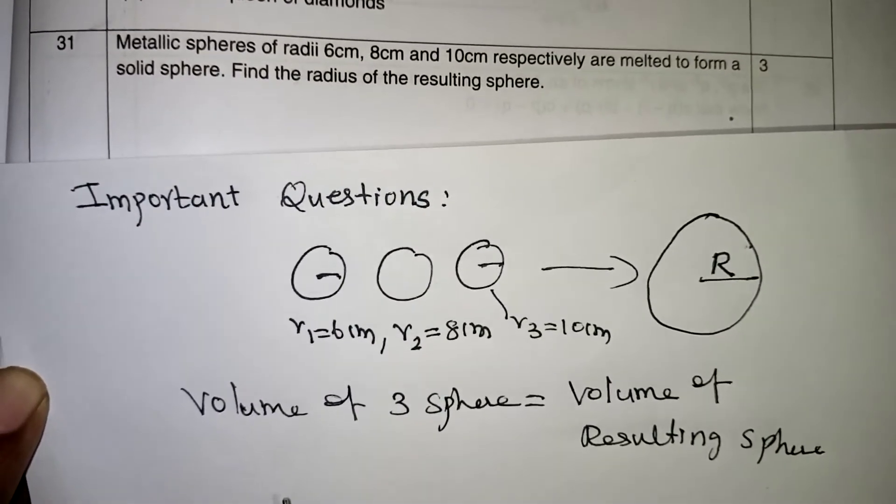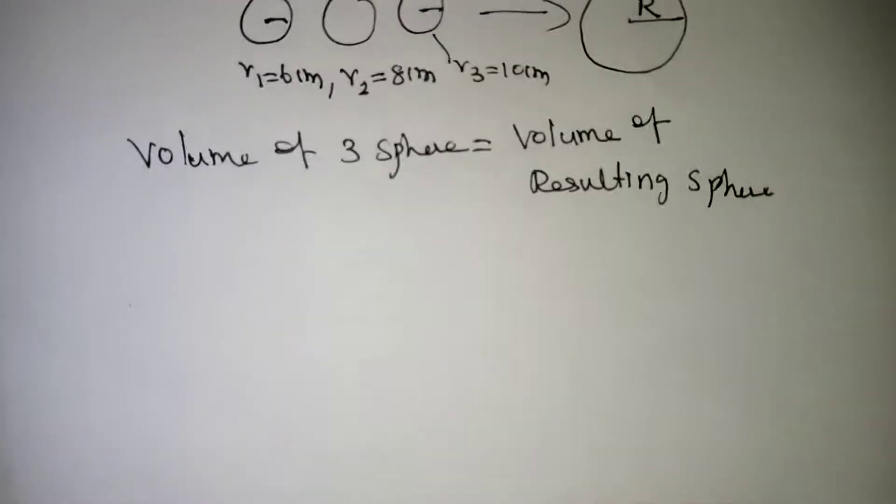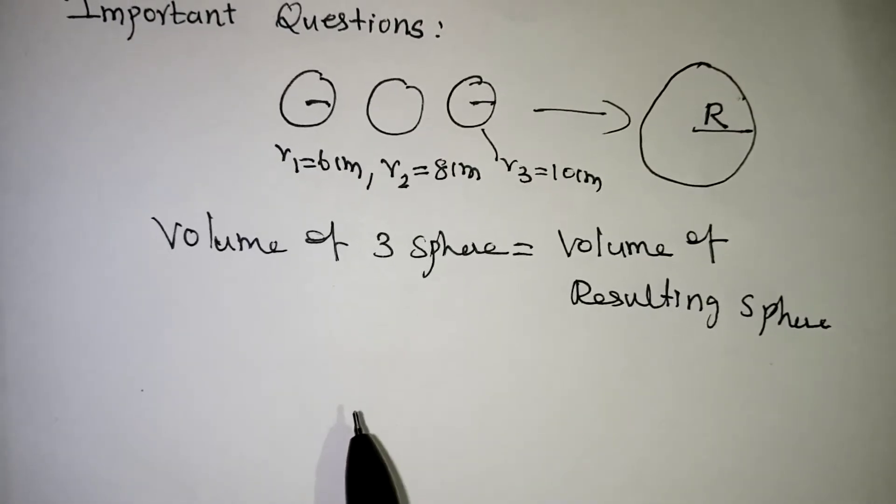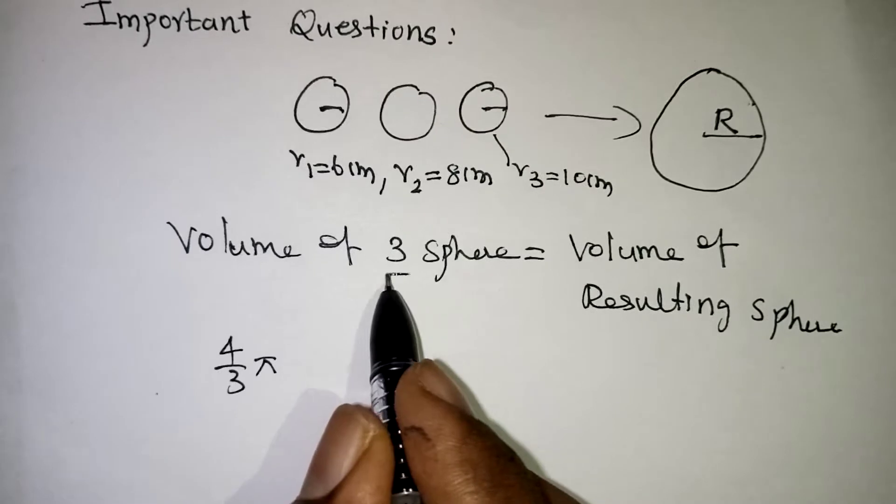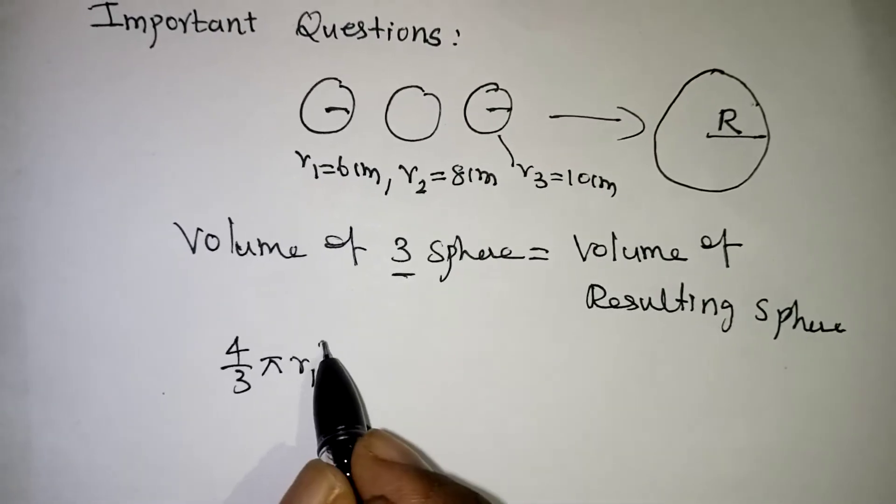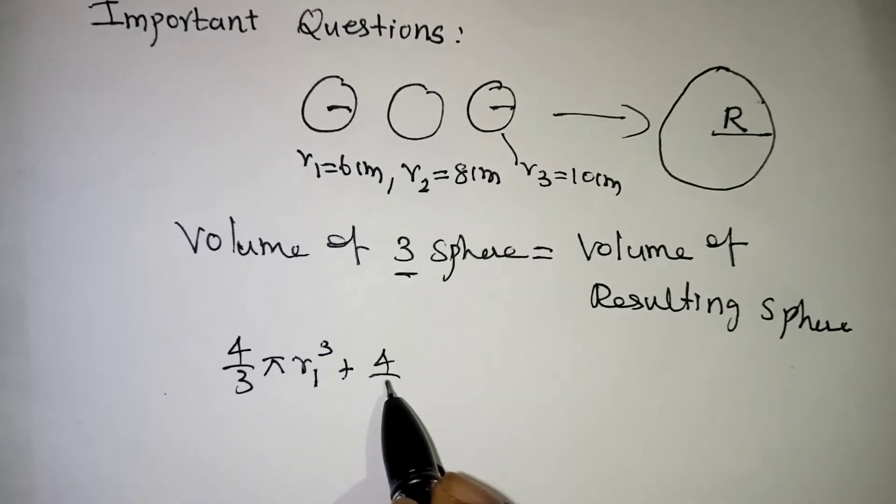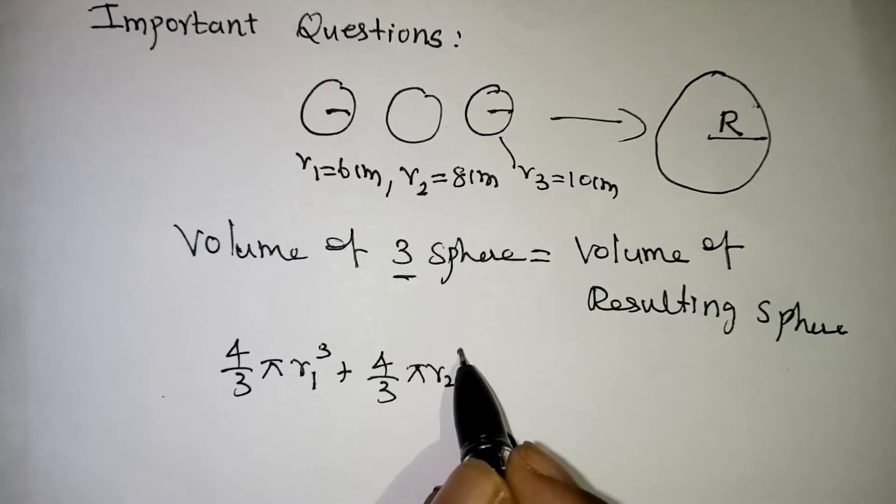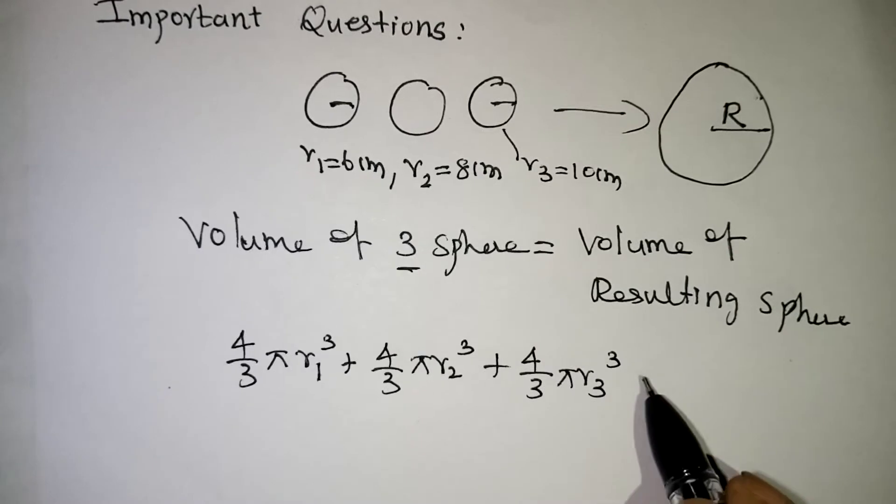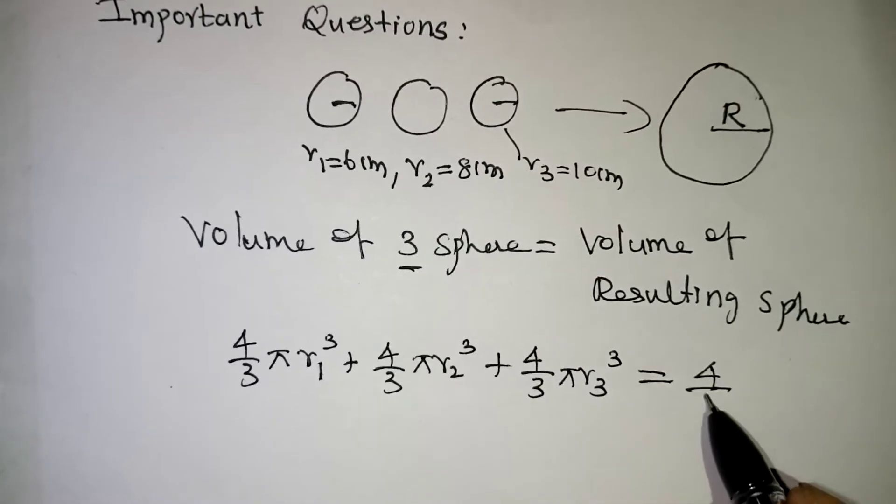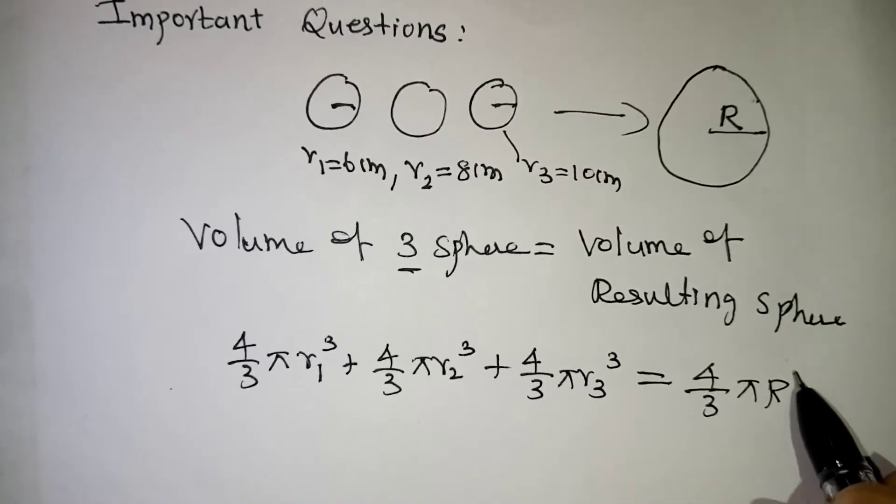Volume of the sphere formula we already know that. So volume of the sphere formula we already know that 4 by 3 pi. For the 3 spheres we should write: 4 by 3 pi R1 cube for the first sphere, 4 by 3 pi R2 cube for the second sphere, 4 by 3 pi R3 cube for the third sphere will be equal to 4 by 3 pi R cube.